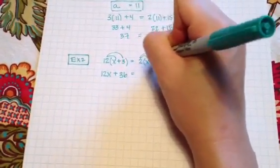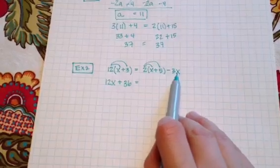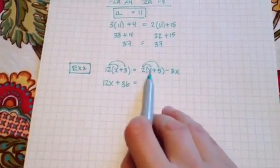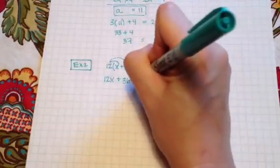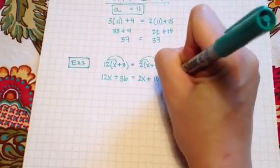And then I'm going to do 2 times x and 2 times 5. Notice I'm not going to multiply 2 times this 3x because the 3x is outside the parentheses, I'm just going to do it to the things that are in the parentheses so I get 2x and 2 times 5 is 10 and I have a minus 3x.